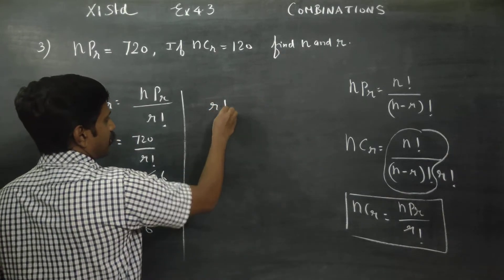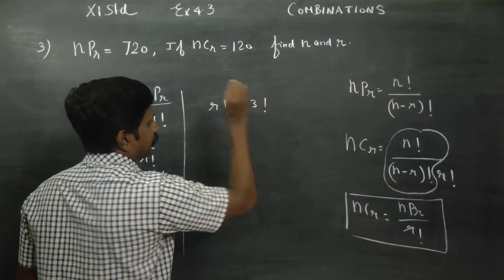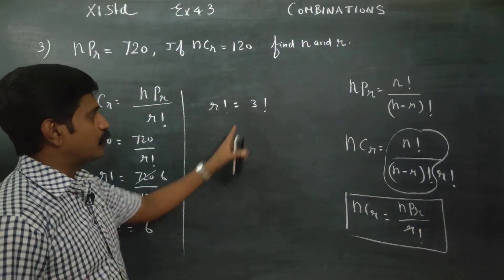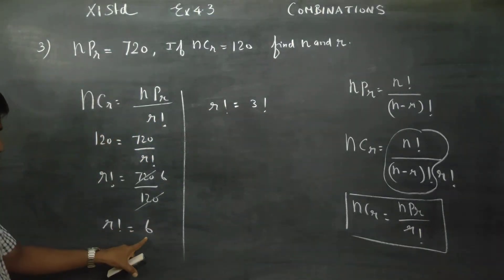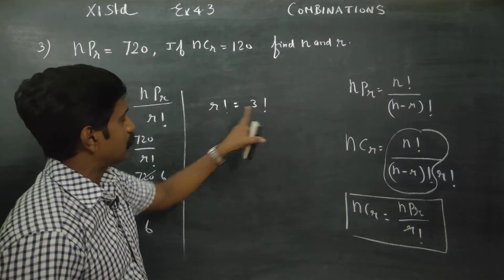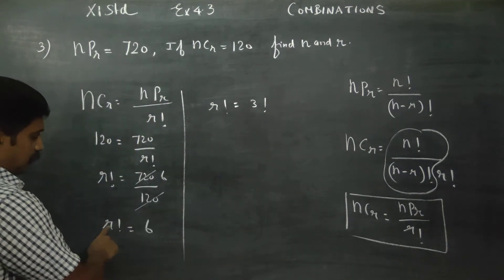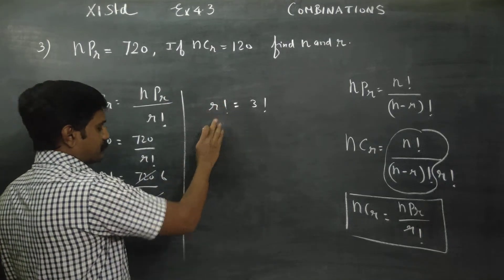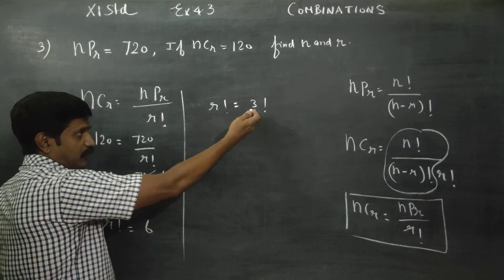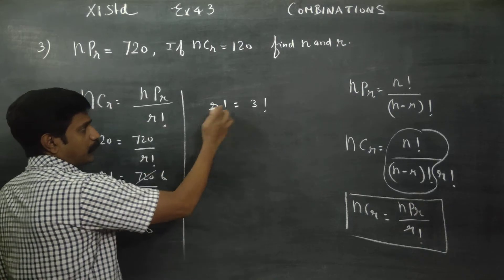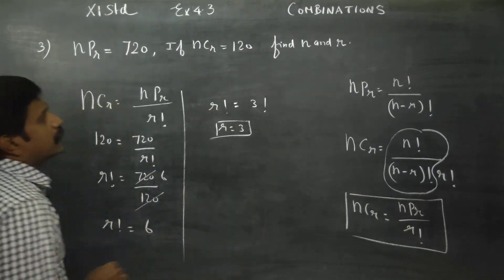R factorial equals 6. Now, 6 can be written as 3 into 2 into 1, which is 3 factorial. So R factorial is equal to 3 factorial. Comparing both sides, R is equal to 3.